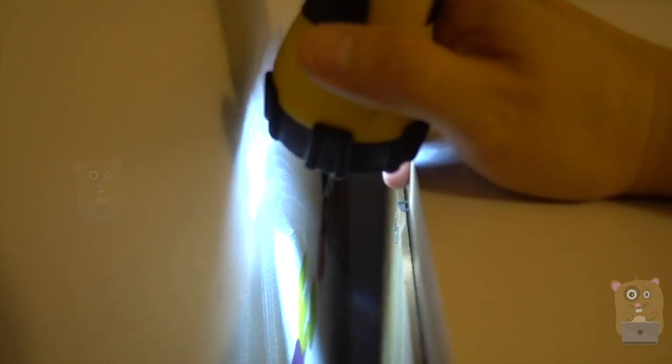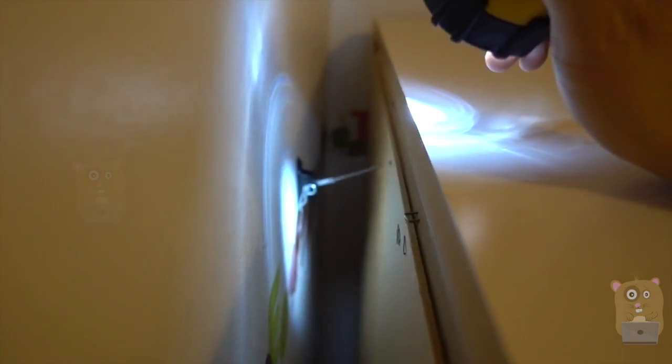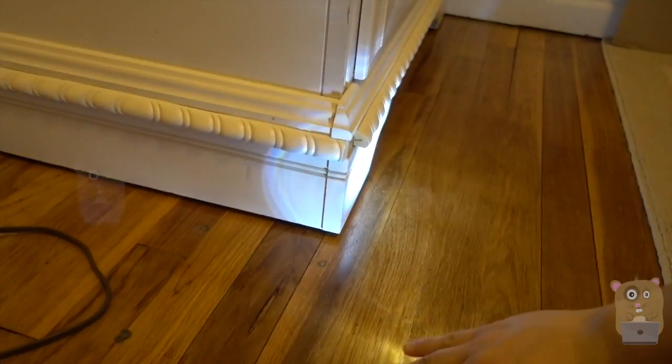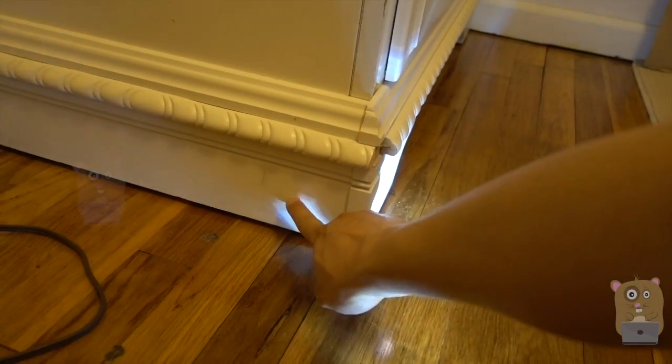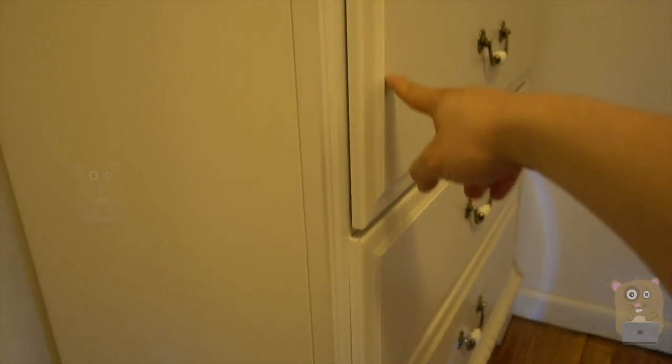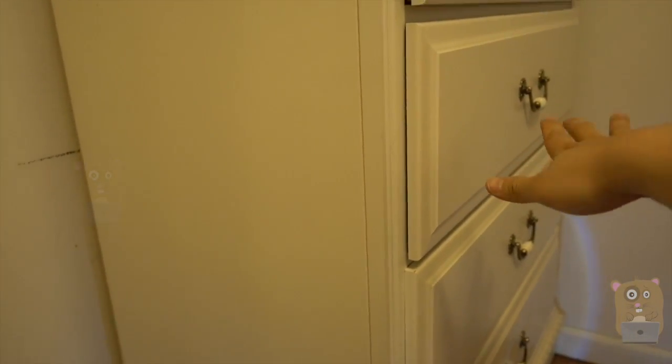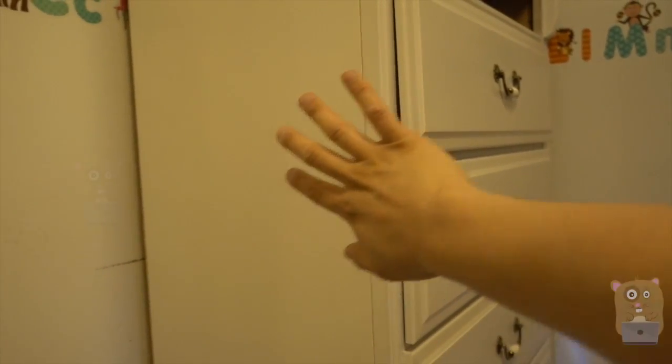So now if I try to tip the furniture, I can't. And I do this in my daughter's room because the footing is actually over here. So if she were to pull out this drawer and put some weight on it, there's a good chance that this dresser will tip forward.